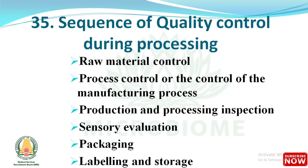The sequence of quality control during processing includes the following steps: raw material control, process control or control of the manufacturing process, production and processing inspection, sensory evaluation, packaging, labeling, and storage.